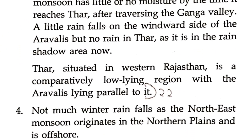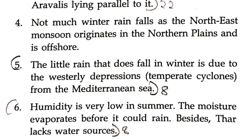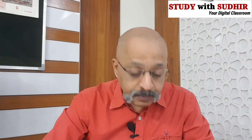Thar, situated in western Rajasthan, is a comparatively low-lying region with the Aravallis lying parallel to it. The little rain that does fall in winter is due to the westerly depression from the Mediterranean Sea. In summer, humidity is very low and the moisture evaporates even before it could rain. Besides, Thar lacks water resources, which we have also talked about in that chapter.